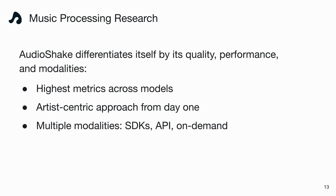Audioshake differentiates itself in three key ways. First, we have the highest metrics across our models. Second, an artist-centric approach from day one — as musicians, it was really important that these be useful technologies for content owners and artists, so we licensed our data from the start and worked hand-in-hand with artists and labels. You can get the crispest separation but lose something like presence, which is wrong if someone's mixing in an immersive environment. And finally, we're available in multiple ways: an on-demand platform, APIs, and SDKs for edge devices.